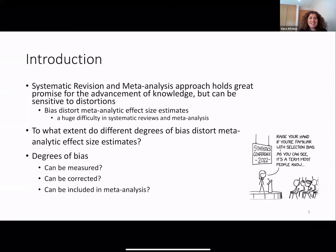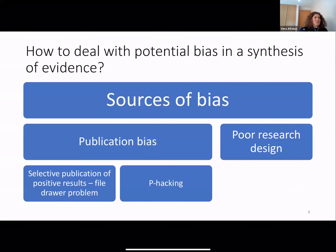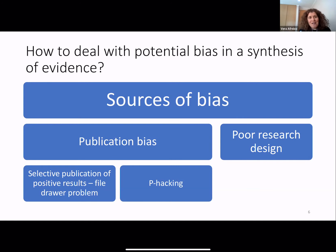Degrees of bias can be measured, can be corrected, can be included in the meta-analysis. How to deal with potential bias in a synthesis of evidence? There are several sources of bias; publication bias is one of them, but poor research designs include several sources of bias. Now we will discuss publication bias.